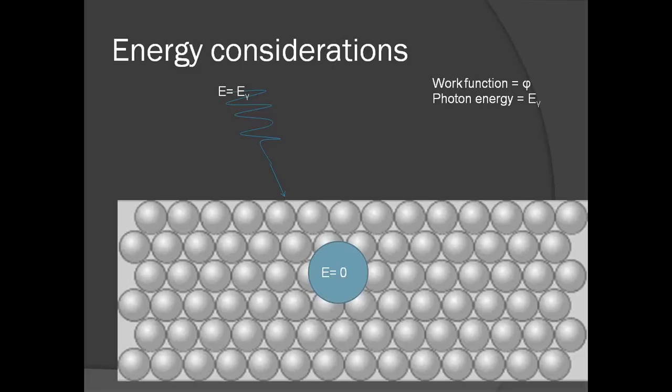When the electron absorbs the photon, it gains all the energy of the photon. The electron then expends some energy escaping from the metal. This energy is called the work function of the metal. The electron then has the energy of the photon minus the work function of the material.